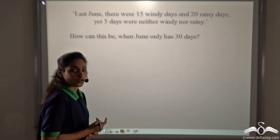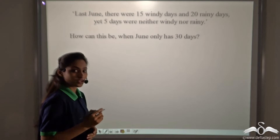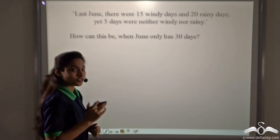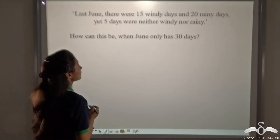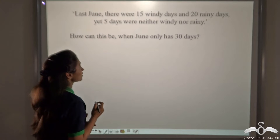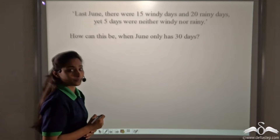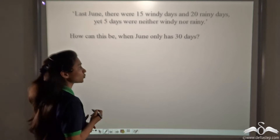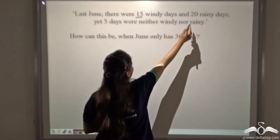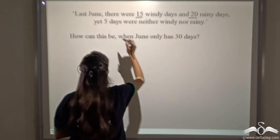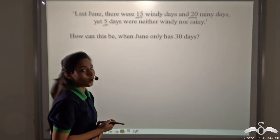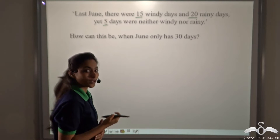In our first lecture, we told you that after solving sets, you would be able to solve impossible problems like this. Let's recall the problem. Last June, there were 15 windy days and 20 rainy days, yet 5 days were neither windy nor rainy. How can this be when June has only 30 days? If you count: 15 plus 20 is 35, plus 5 is 40 — but June has only 30 days. Now, after solving sets, you can solve this problem.